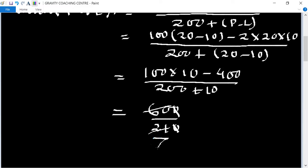Dividing both by 30: 600 divided by 30 equals 20, and 210 divided by 30 equals 7, so we get 20 upon 7 percent.